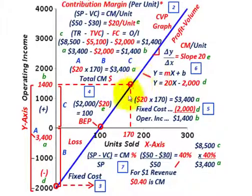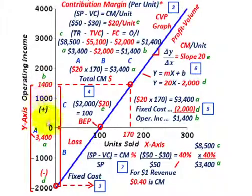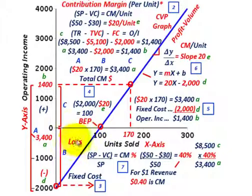Now looking at our profit-volume line, generally you're going to have some fixed cost on the product. So this is where you're going to start with a negative operating income, and you're not going to have any positive operating income until you hit some break-even point on unit sales. That means you're going to be selling at a loss up until the break-even point, and then beyond that you're going to have an actual positive operating income.